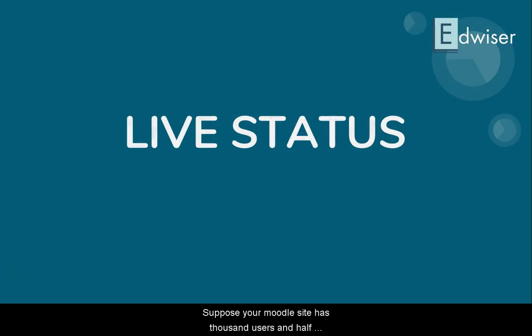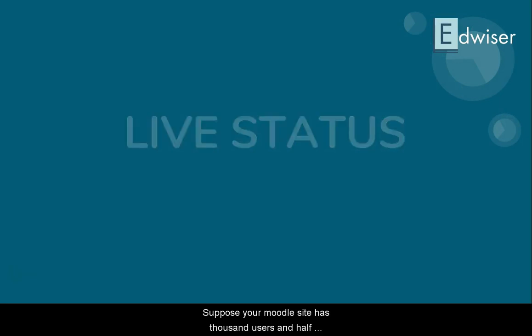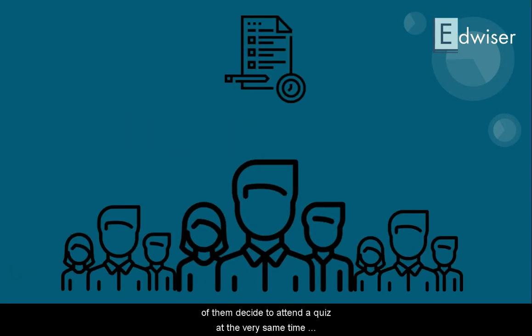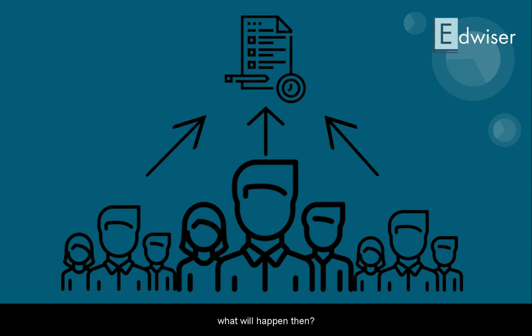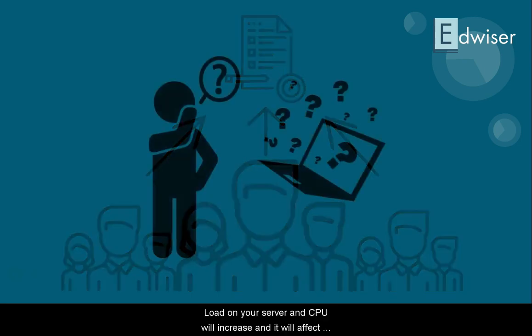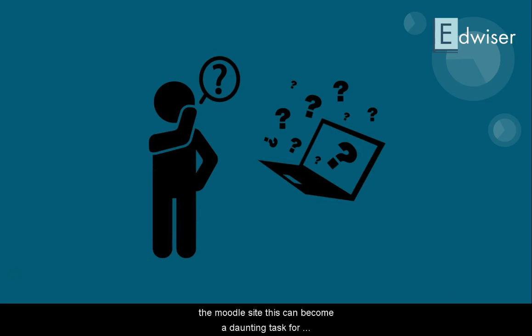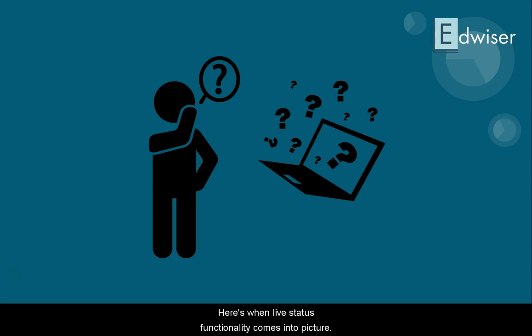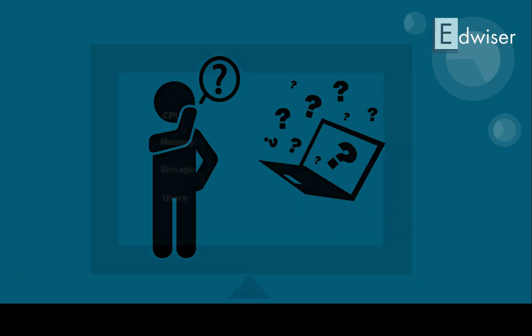Suppose your Moodle site has 1000 users and half of them decide to attend a quiz at the very same time. What will happen then? The load on your server and CPU will increase and it will affect the Moodle site. This can become a daunting task for the site administrator. Here is when the Live Status functionality comes into picture.